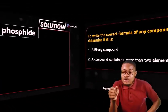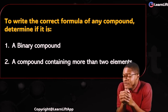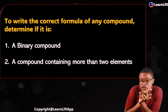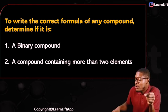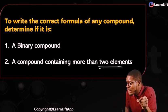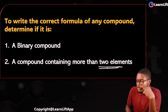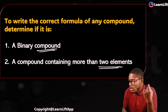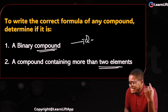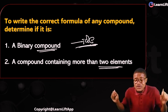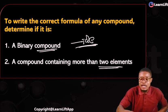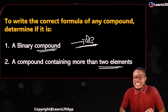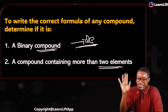When writing the formula of any compound, it is either a binary compound — which we have now covered — or a compound containing more than two elements. For binary compounds: they contain two elements, their names mostly end in '-ide', and you follow the four rules. The next class will look at compounds containing more than two elements. See you in that class. Bye-bye.